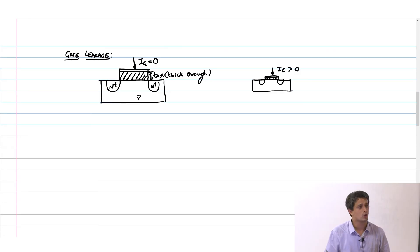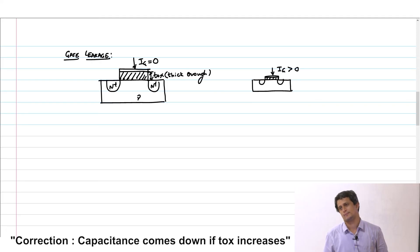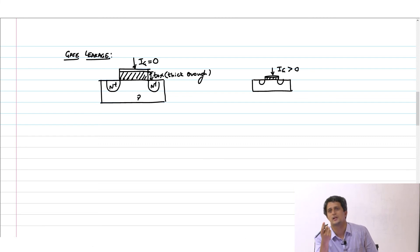People had to do something to stop this. They wanted to increase the thickness. Now if you increase the thickness then your capacitance goes up, which means that the gate control actually comes down. They had to do something where the capacitance remained the same, but my thickness still went up, so that the quantum mechanical tunneling came down. You want epsilon_0 * A / T_ox to remain the same after increasing the thickness. How do you achieve that?